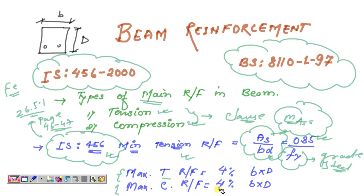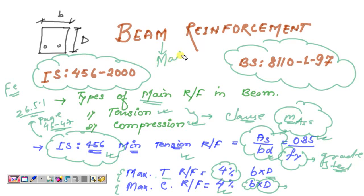As per IS 456, the maximum compression reinforcement should not exceed 4% of b×D, where D is the overall depth and b is the width of the beam. Similarly, the maximum tension reinforcement should also not exceed 4% of b×D. So for main reinforcement under IS 456: minimum tension reinforcement uses the formula As/(bd) = 0.85/fy, and both maximum tension and maximum compression reinforcement must not exceed 4% of b×D. This is from IS 456, pages 46 and 47, Clause 26.5.1.